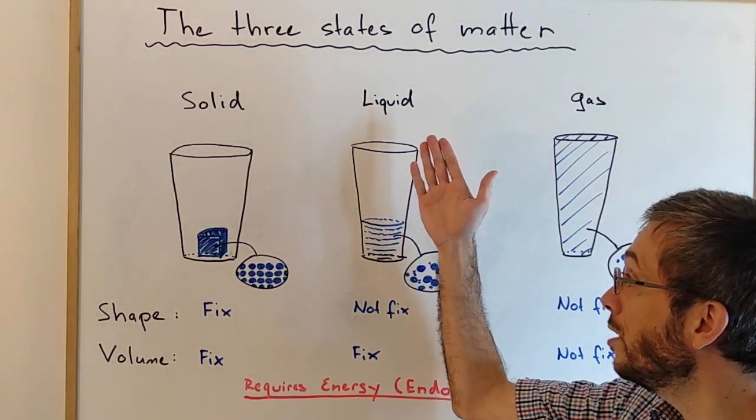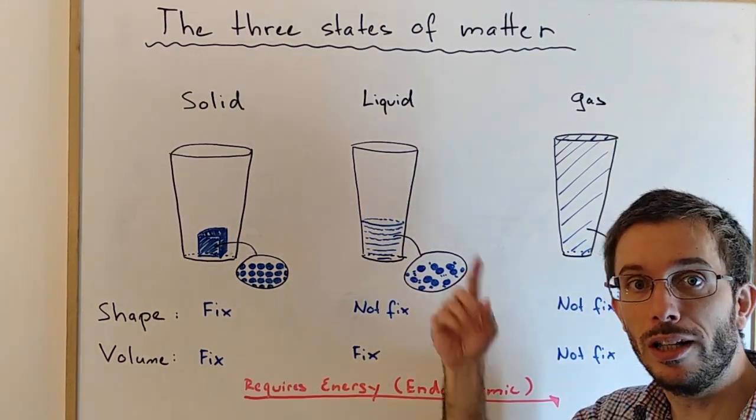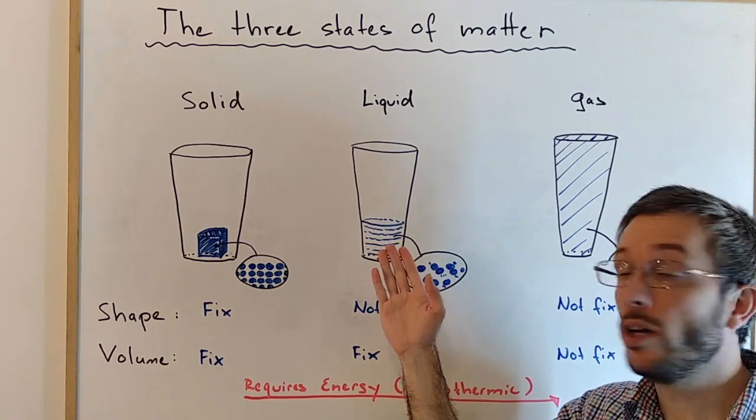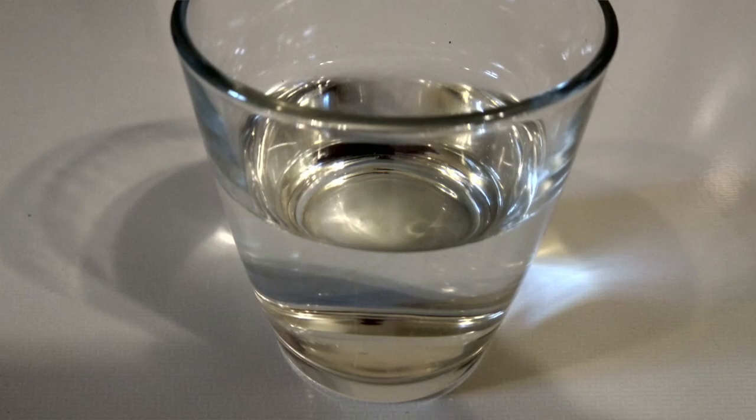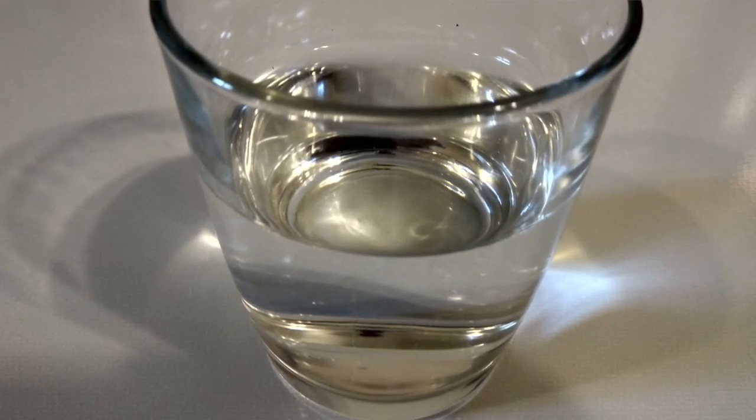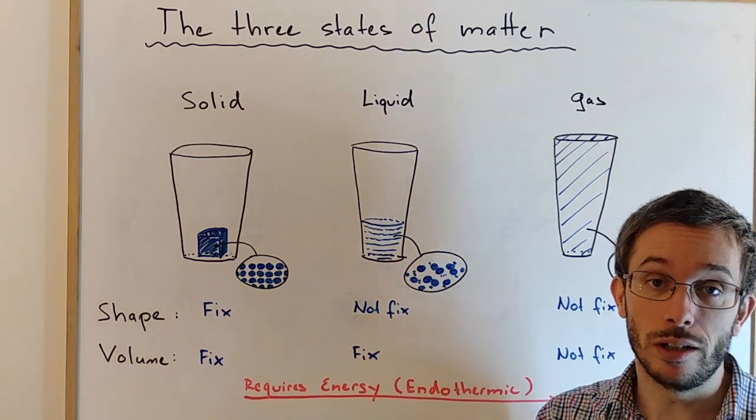When something is a liquid, then the shape is not fixed anymore. A liquid will always take the shape of the container it is in. Like the water, for example, will take the shape of the glass at the bottom once it is liquid. The volume, however, is fixed. If I put five milliliters of water in a huge container, it will still be just five milliliters of water.